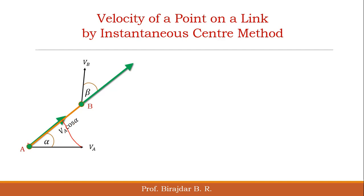So VA resolved along line AB gives VA·cos(α). Similarly, considering the triangle for point B, the adjacent side gives VB·cos(β).